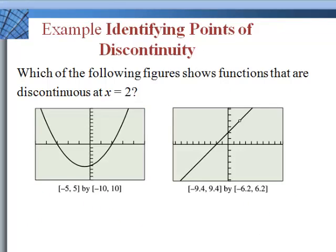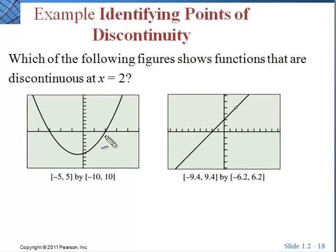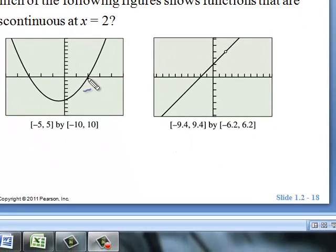So looking at identifying the points of discontinuity, which of the following figures shows functions that are discontinuous at x equals 2? Well, we come over here and we look at x equals 2, and we have a point there. It is continuous. If we come to the other graph over here, at x equals 2, we have a hole, so it is discontinuous, or there is not continuity at that point.